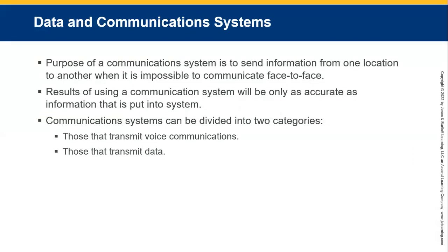The purpose of communications is to send and receive information from one location to another. We can't always communicate face to face — sometimes we must use the most available or the best available resource we have. Results of using communication systems will only be as accurate as the information we put into them. Communications can be divided into two main categories: voice calls and data.